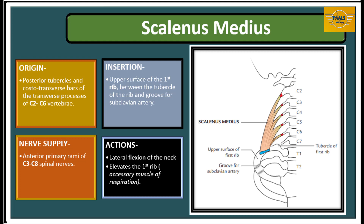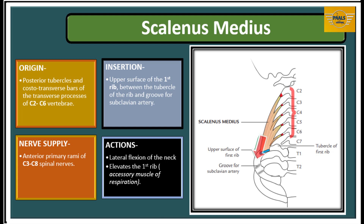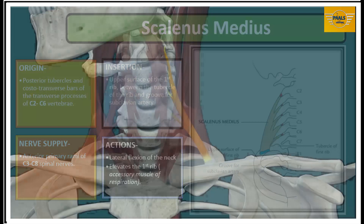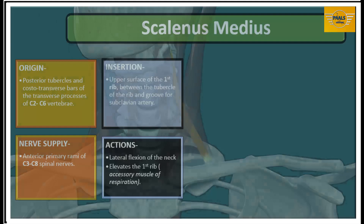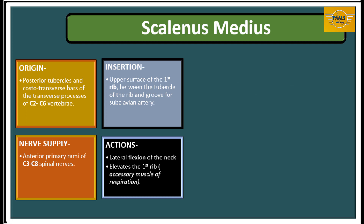Scalenus medius lies between the scalenus anterior and scalenus posterior and is the longest and largest of all the scalene muscles. Its origin is from the posterior tubercles and costo-transverse bars of the transverse processes of C2 to C6 vertebrae. It runs inferiorly and laterally to be inserted on the upper surface of the first rib, between the tubercle of the rib and the groove for the subclavian artery. Innervation is from the anterior primary rami of C3 to C8 spinal nerves. Its actions are lateral flexion of the neck and elevation of the first rib when the upper attachment is fixed, acting as an accessory muscle of respiration.